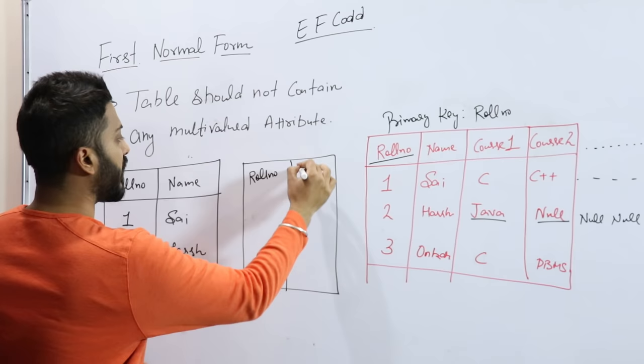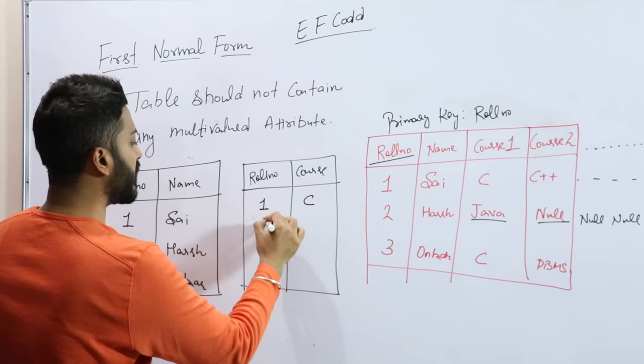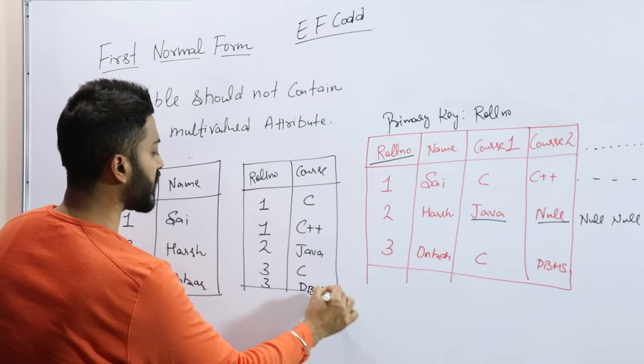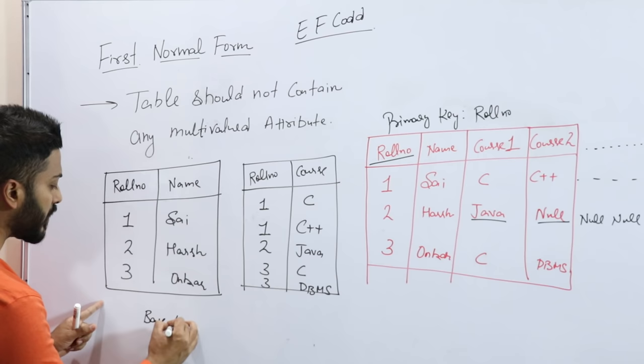That table will contain roll number and course. So roll number one, course will be C; one, C++; two, Java; three, C; and three, DBMS.